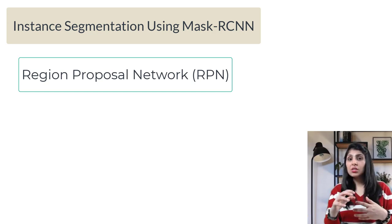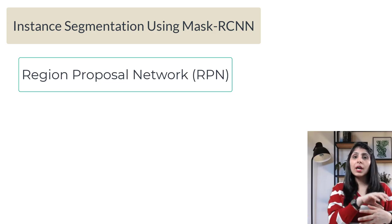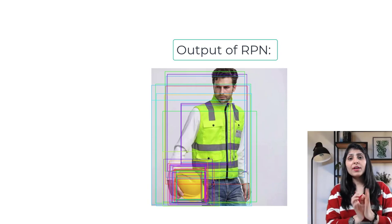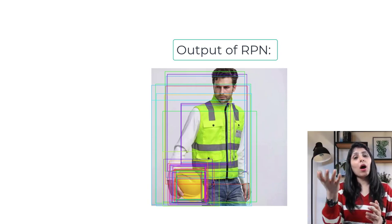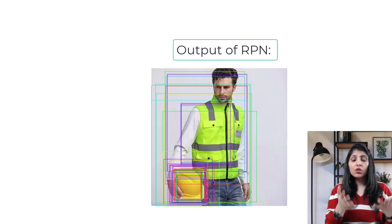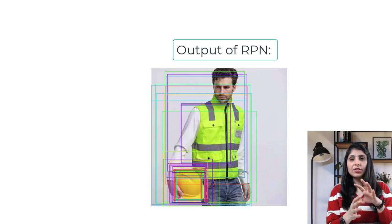The regions where objects are present become the input to ROI Pooling - Region of Interest Pooling. The region proposals from the RPN may be of different shapes, so we use ROI Pooling to make all regions the same shape.